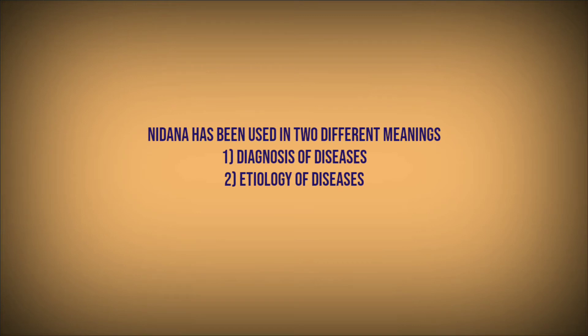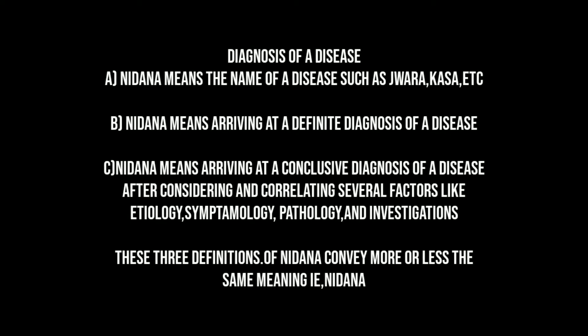The first one is Nithanam — Etiology. Nithana has been used in two different meanings: first, diagnosis of diseases, and second, etiology of diseases. As diagnosis, Nithana means the name of a disease such as Jwara, Kasa, etc., arriving at a definite and conclusive diagnosis after considering and correlating several factors like etiology, symptomatology, pathology, and investigations.